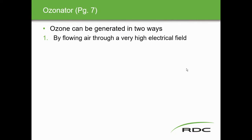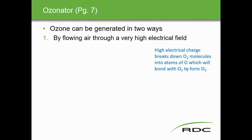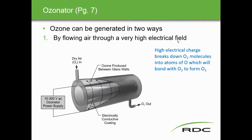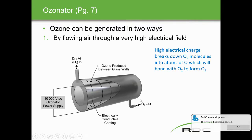Ozone can be created in two ways. First, by flowing air through a very high electrical field: a high electrical charge breaks O2 molecules into oxygen atoms, which bond with O2 to form O3. In the ozonator diagram, dry air with oxygen is subjected to 10,000 volts AC, and ozone gas is produced between the electrically conductive walls. The O3 output must exceed the NO concentration to ensure complete reaction.